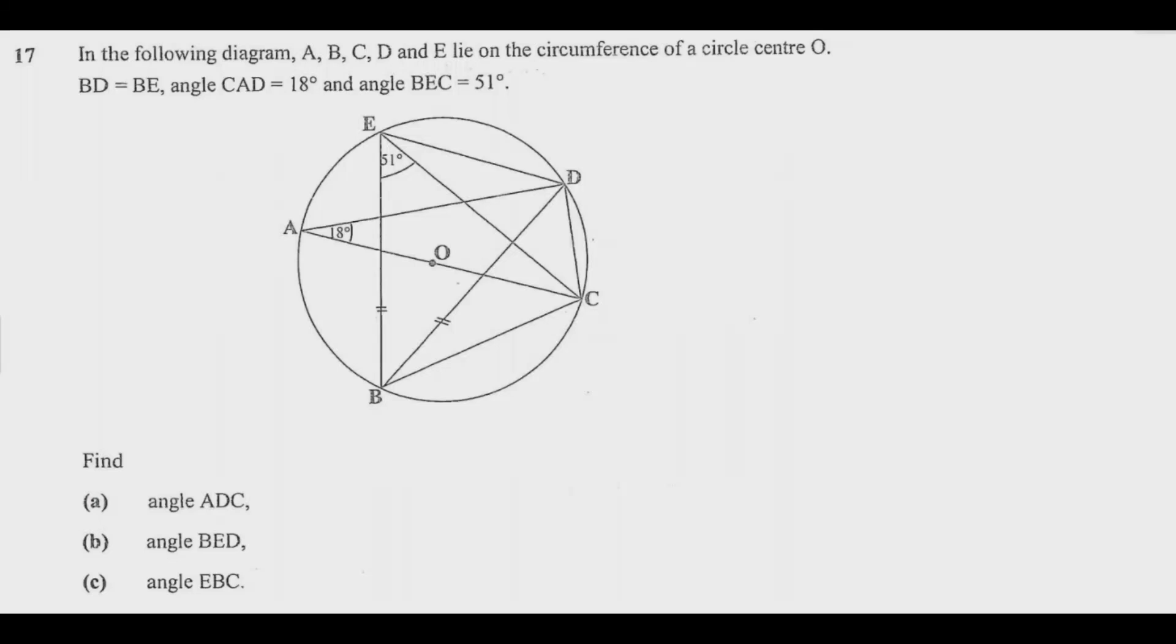Let us look at question 17. In the following diagram A, B, C, D, and E lie on the circumference of a circle center O. BD equals BE, angle CAD equals 18 degrees, and angle BEC equals 51 degrees.